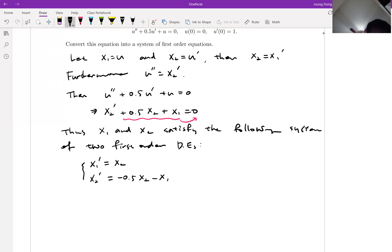have this. And also, since u(0) = 0, then we say x1 is u right, so we can say x1(0) = 0. And since u prime(0) = 1, and we define u prime as x2, then we can write x2(0) = 1.